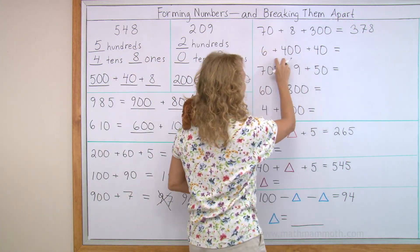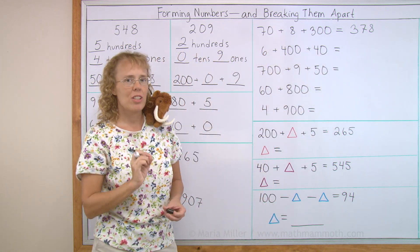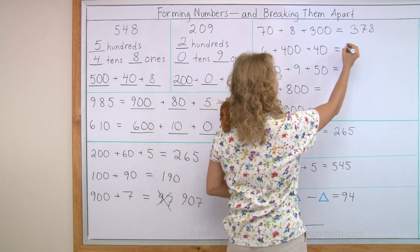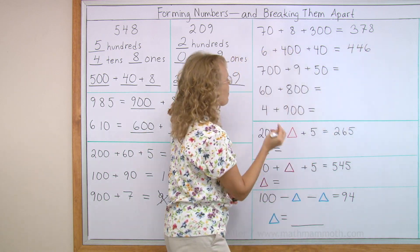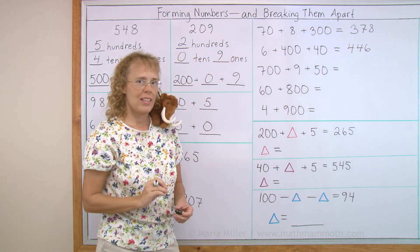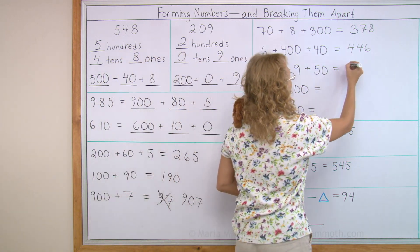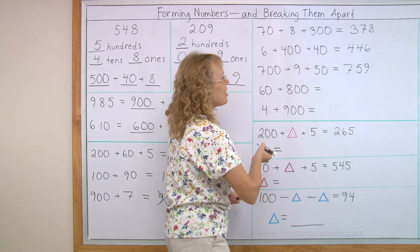Over here, the same thing. Can you think of what number it makes? Six plus four hundred plus forty. First, the hundreds, four hundred, and then forty, and then six. And here? Seven hundred plus nine plus fifty. But the hundreds first, then the tens, then the ones. Seven hundred fifty-nine.